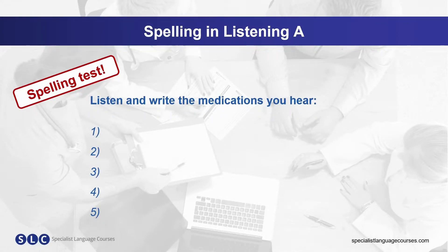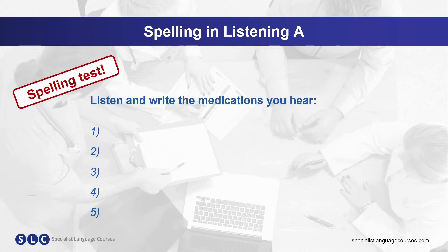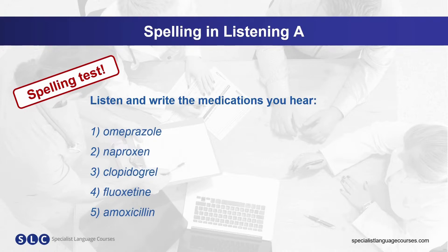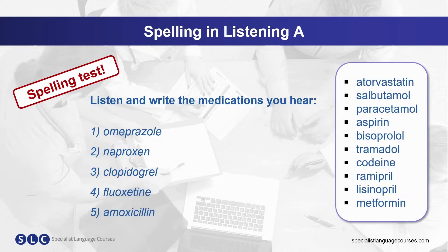In Listening Part A, you often have to write down the names of medications. Let's do a little spelling test — listen and write down the words you hear: one, omeprazole; two, naproxen; three, clopidogrel; four, fluoxetine; five, amoxicillin. Let's take a look at how they are spelled. Here are some more common medications which you could learn the spelling of. This is not an extensive list, but you can begin with these and add more as you study.